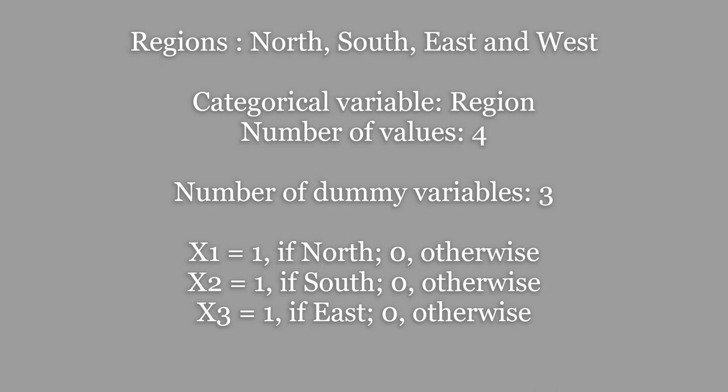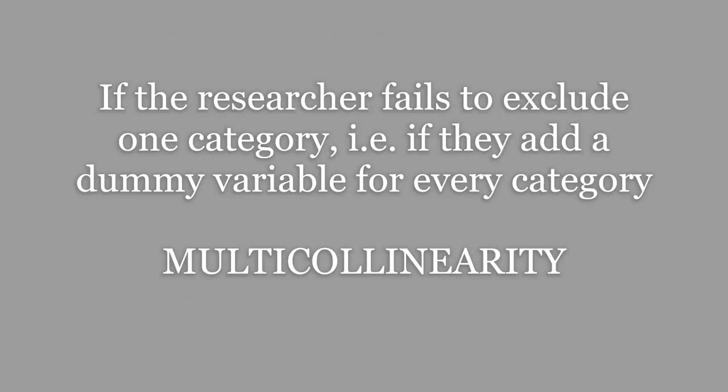We do not need to include the dummy variable for west because if x1, x2 and x3 are 0, we know that the region is west because it is not north, south or east. If the researcher fails to exclude one category—if they add one more dummy variable for each category, north, south, east and west—then it will cause multicollinearity.